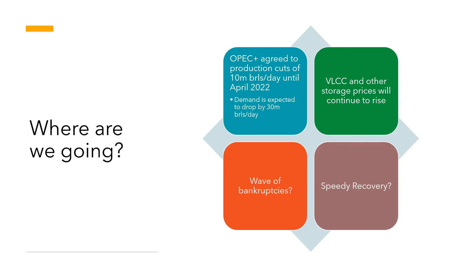Second, VLCC and other storage prices will continue to rise until storing oil reaches an equilibrium — eventually producers will realize they can't afford to store it, so they can't afford to produce it, and output will correct. Third, we're likely to see a wave of bankruptcies, which will also help slow down production.